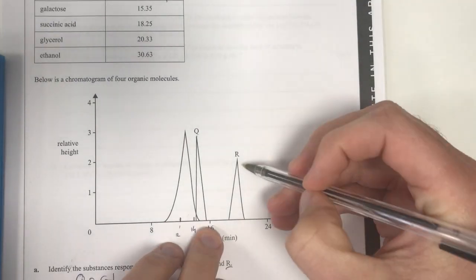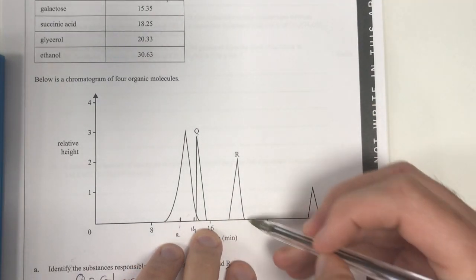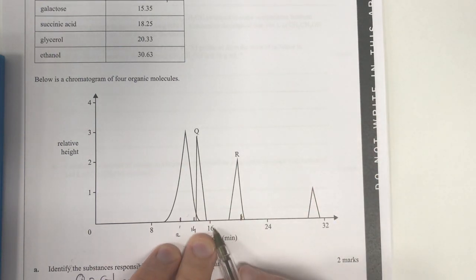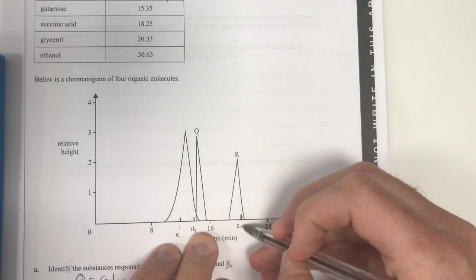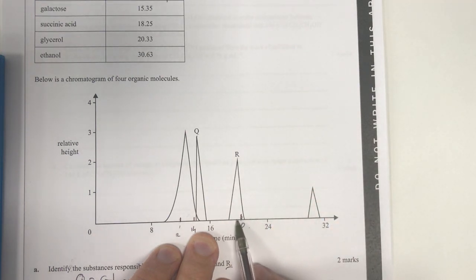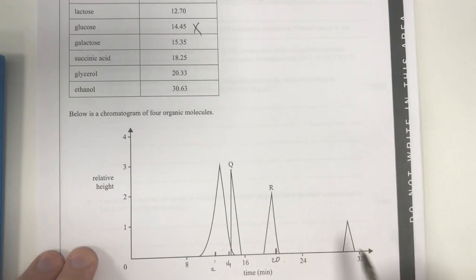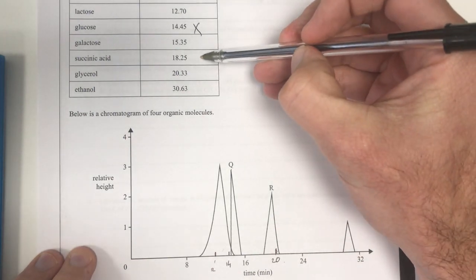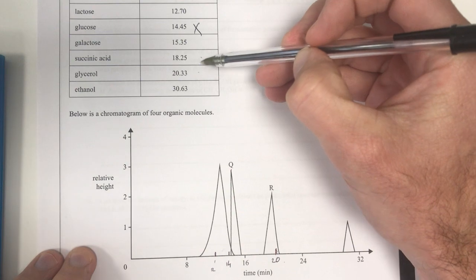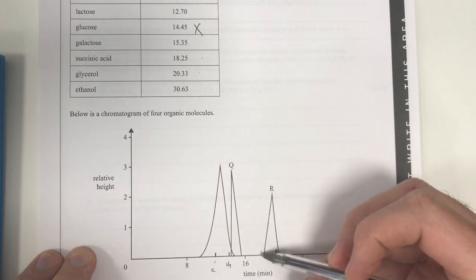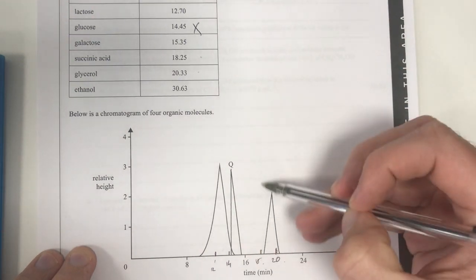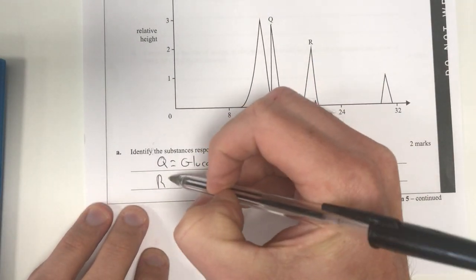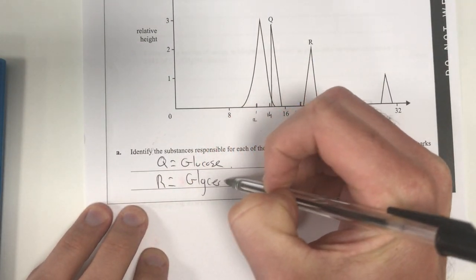And then R, let's have a look. Halfway between these two is about around there-ish, I think. So what's that going to be? That's going to be 20. So it looks like it's just below halfway, or bang on halfway really. It's either going to be this or this. It wouldn't be 18 because 18 is going to sit around about here. So I think it's going to be glycerol. So R will be glycerol.